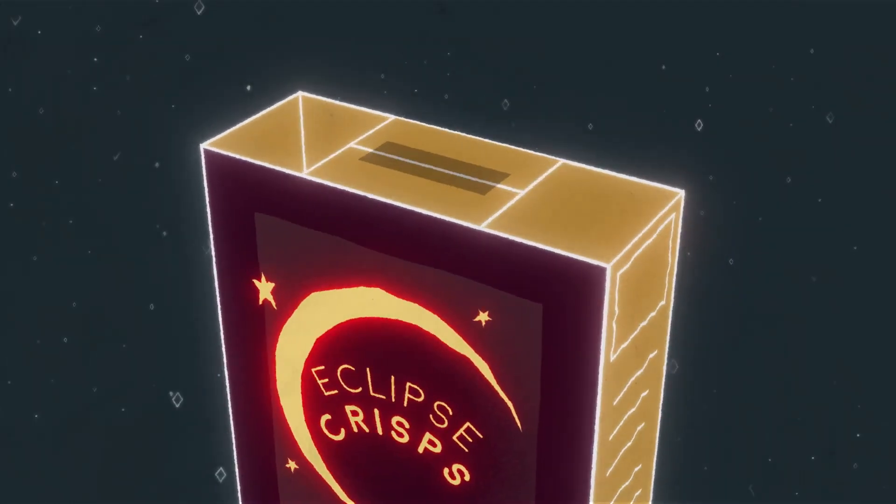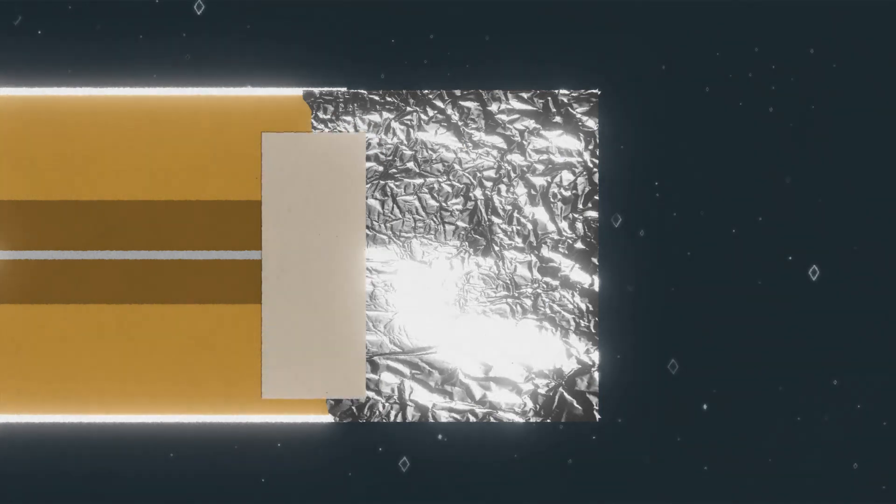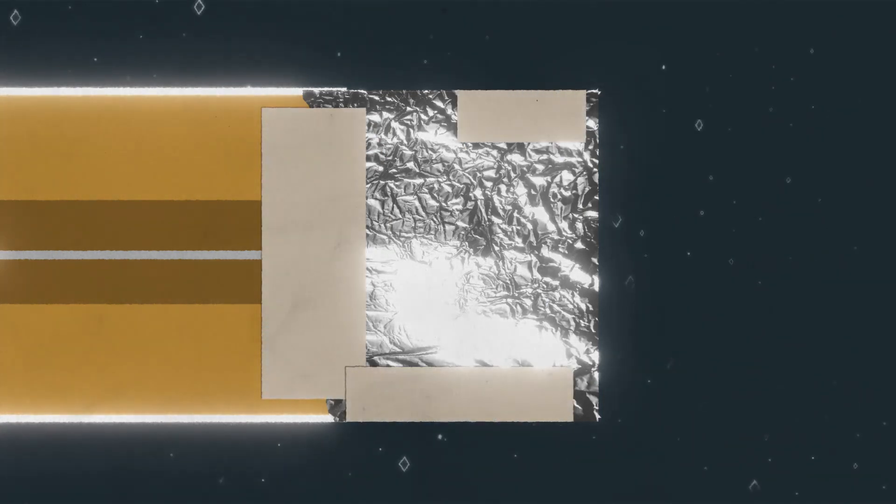Then once you get that taped on, you're going to tape the flap shut, and then you're going to get some foil and tape it right here.